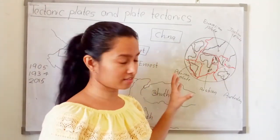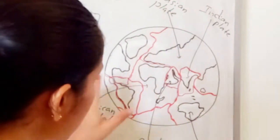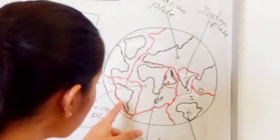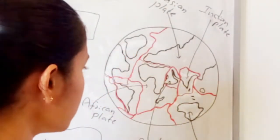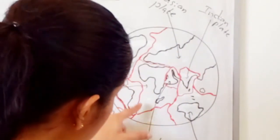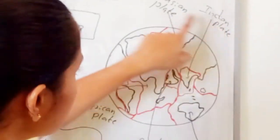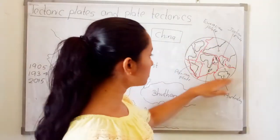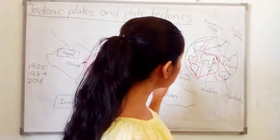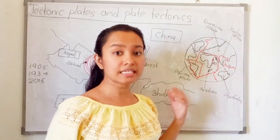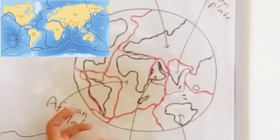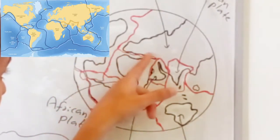This is our earth. You can see some land areas and there are sea areas. In black colour I have mentioned the land area. You can see the red colour parts — this is the outer surface, the surface of the earth. We call it the earth crust. This earth crust is divided into sections, which I have marked in red colour.